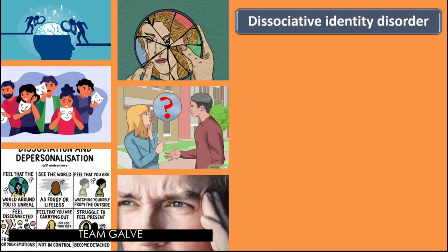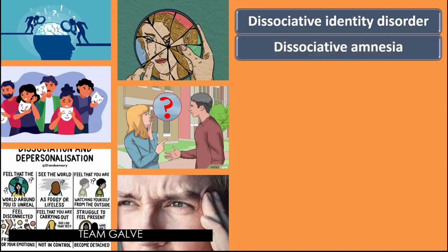The first type is dissociative identity disorder. First recognized in DSM-3 as multiple personality disorder, dissociative identity disorder is defined in DSM-5 as requiring two or more fully distinct personality states, which in some cultures may be described as an experience of possession. Next is dissociative amnesia — an inability to recall important personal information, usually of a traumatic or stressful nature.